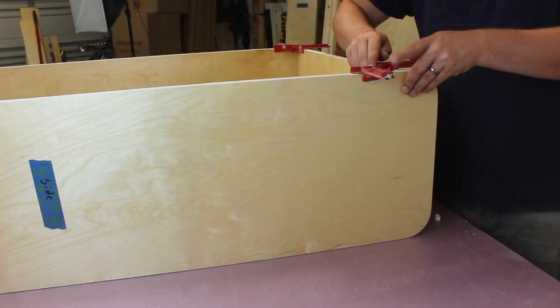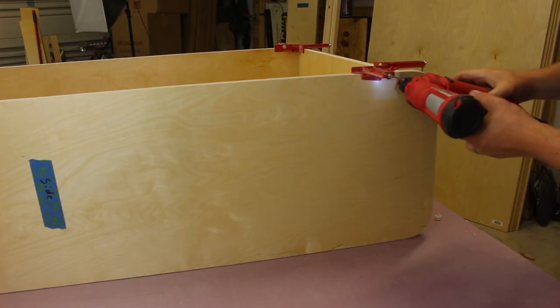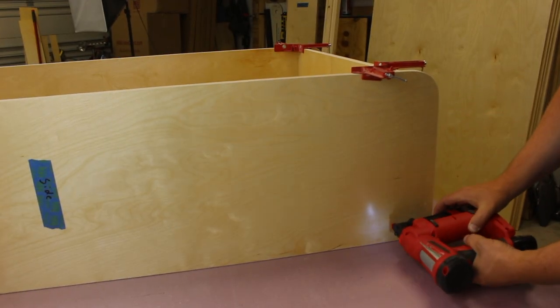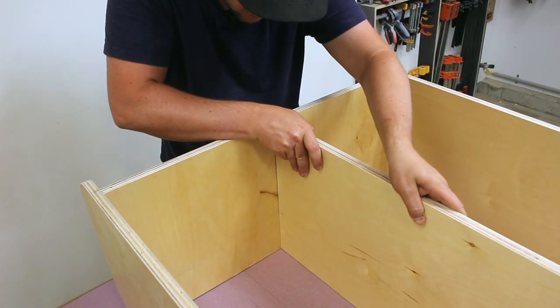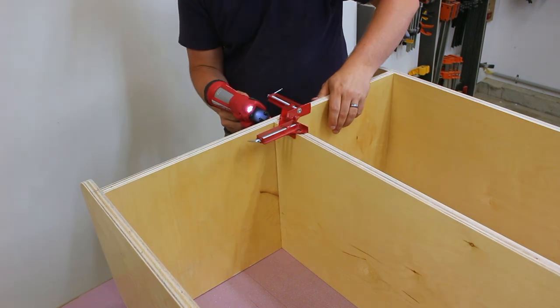These 90 degree clamps are great for this type of project because they hold everything in place until you can get some nails in. The center divider is going to go in just the same, just make sure it's perfectly centered between your two sides.